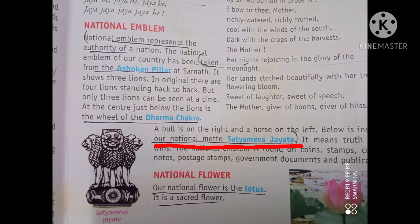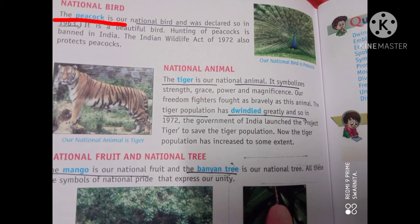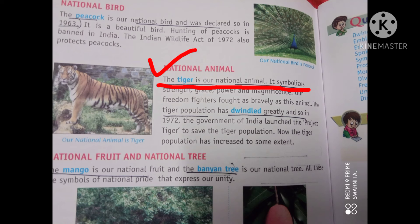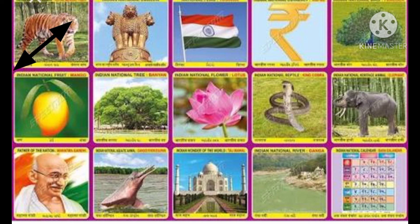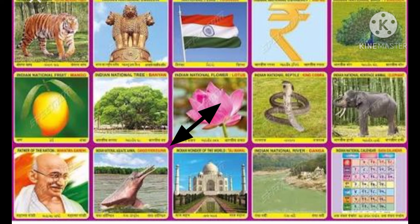The peacock is our national bird, declared so in 1963. The national animal is the tiger. The national fruit is the mango, and the banyan tree is our national tree. Let's look at the national symbols at a glance: national animal, national emblem, national flag, national bird, national fruit, national tree, and national flower.